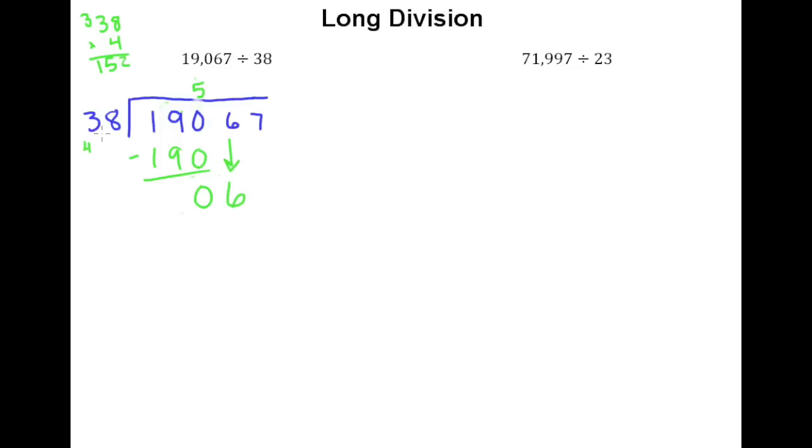At this point we say 38 goes into 6 how many times? But of course it doesn't. But the part of the process we cannot skip is that if 38 does not go into 6 we must say so. Once I've dropped a digit down, if 38 or whatever the divisor is does not go into the remainder with that digit dropped down, you have to say it goes in 0 times. Once you've said it goes in 0 times, you can just drop the 7 down.